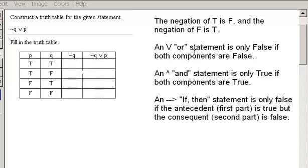The second rule is that an OR statement, which is the V type symbol, is only false if both components are false.